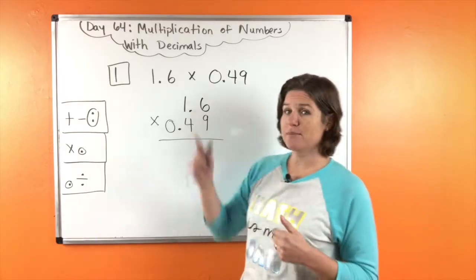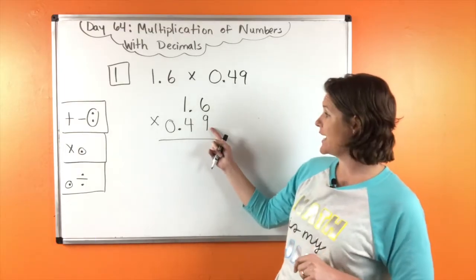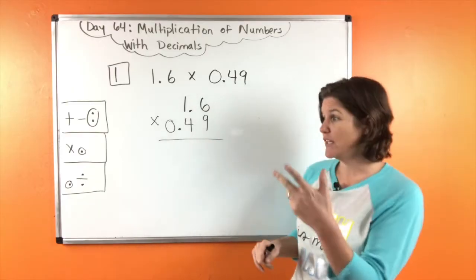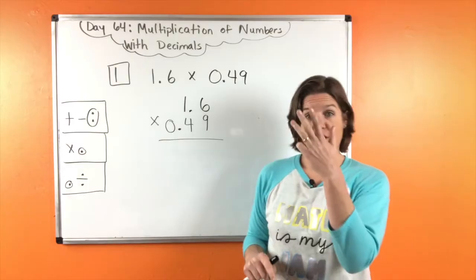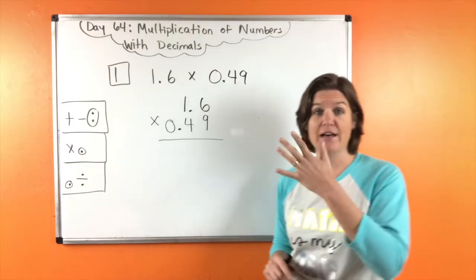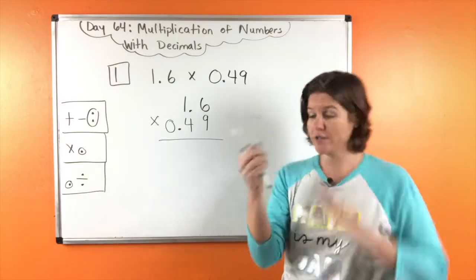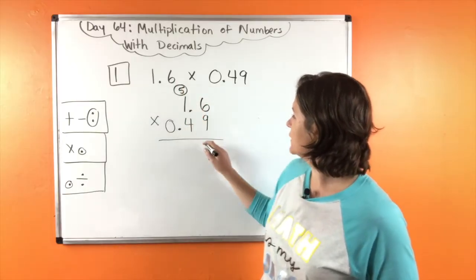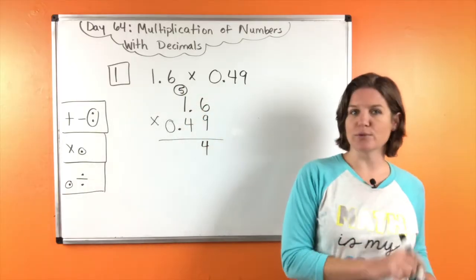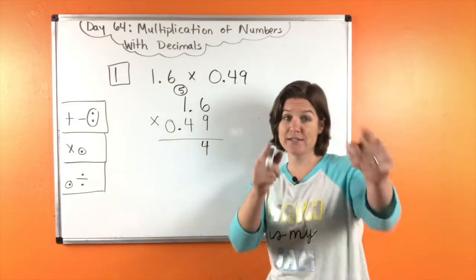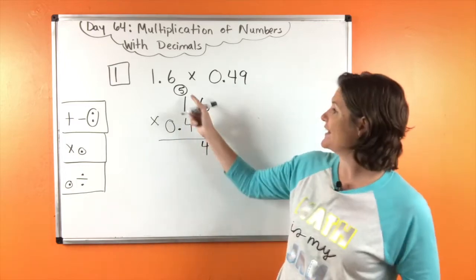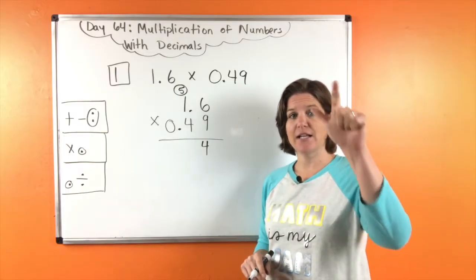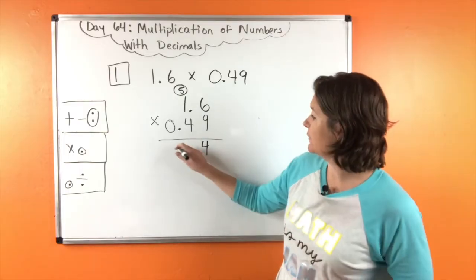So nine times six: nine, eighteen, twenty-seven, thirty-six, forty-five, fifty-four. So fifty-four. Nine times one is nine. And nine plus five — nine, ten, eleven, twelve, thirteen, fourteen. Fourteen. Now we're going to do three things: we're going to cross out, erase, and place a zero. Cross out, erase, and place a zero. Four times six: four, eight, twelve, sixteen, twenty, twenty-four. Four times one would be four, plus two would be six. And that's a zero, so we don't have to worry about that.